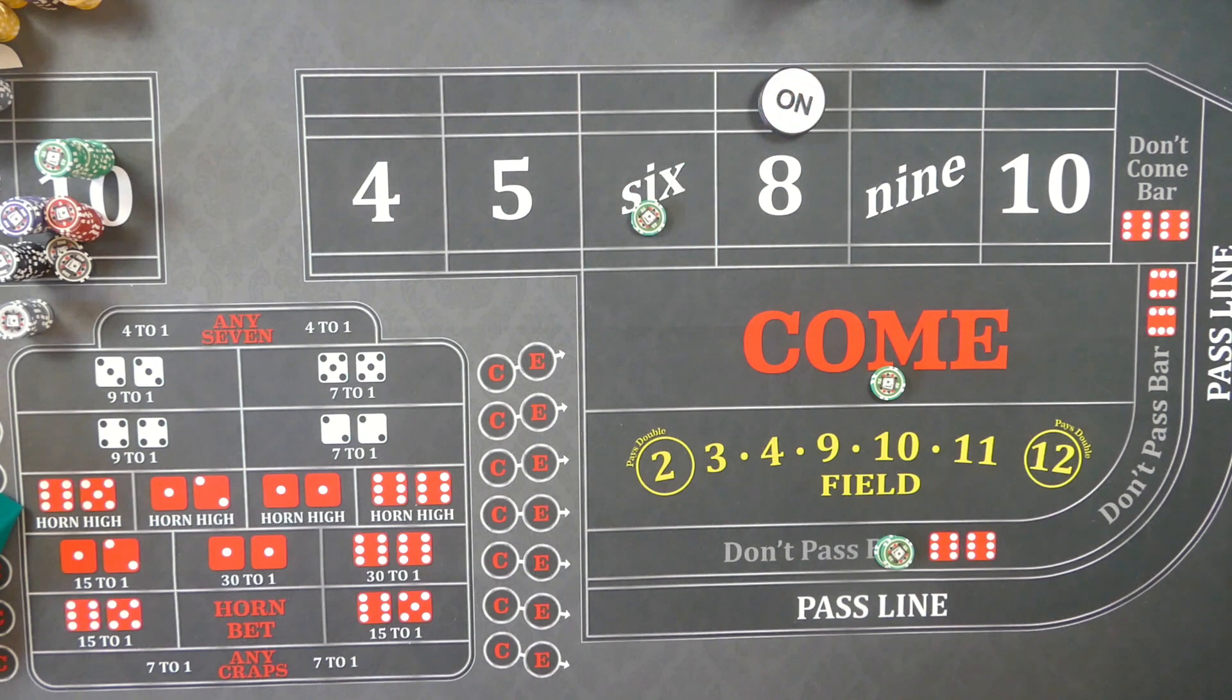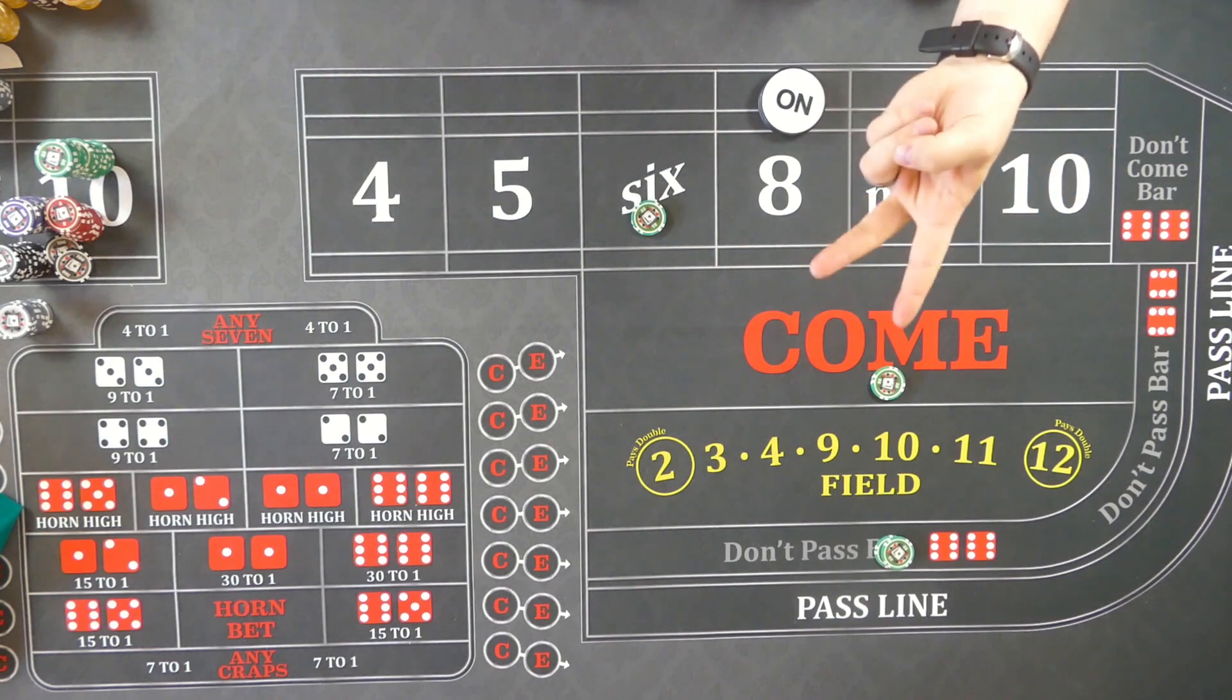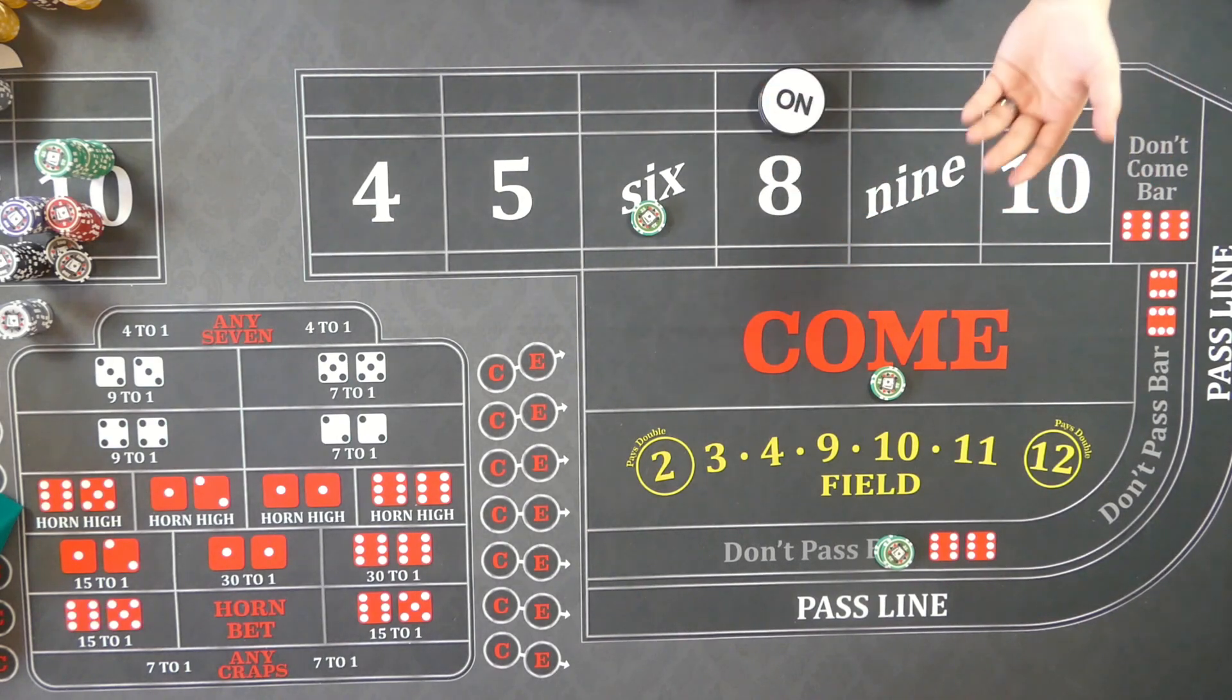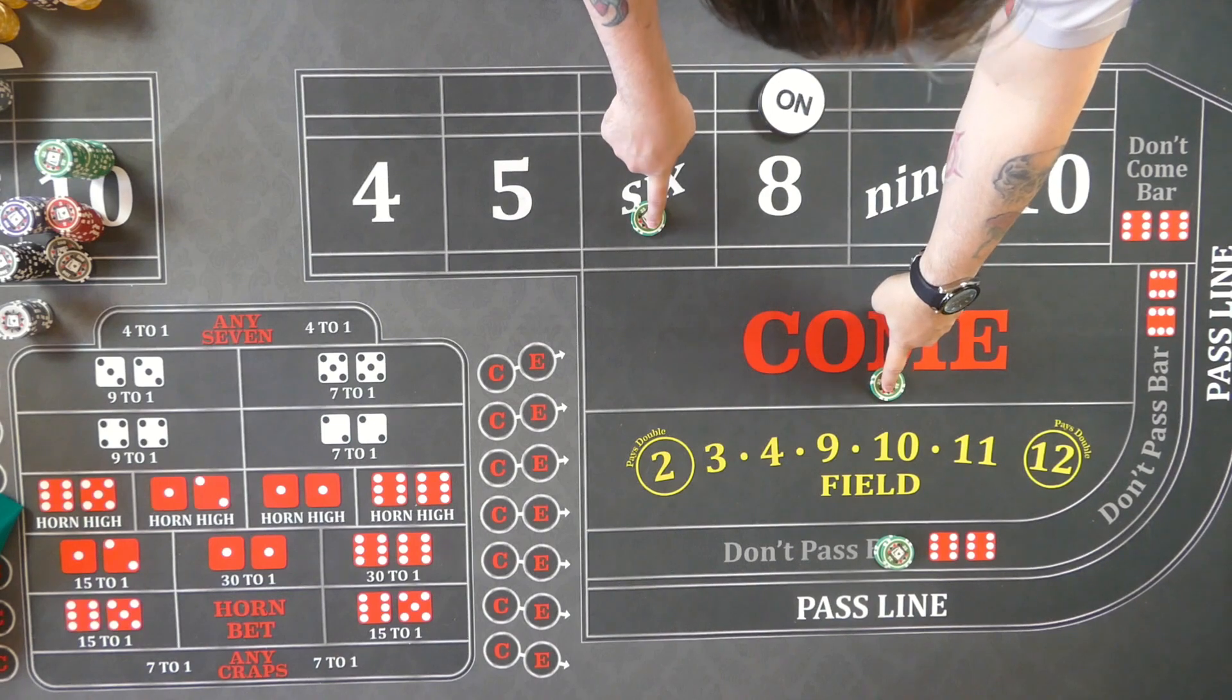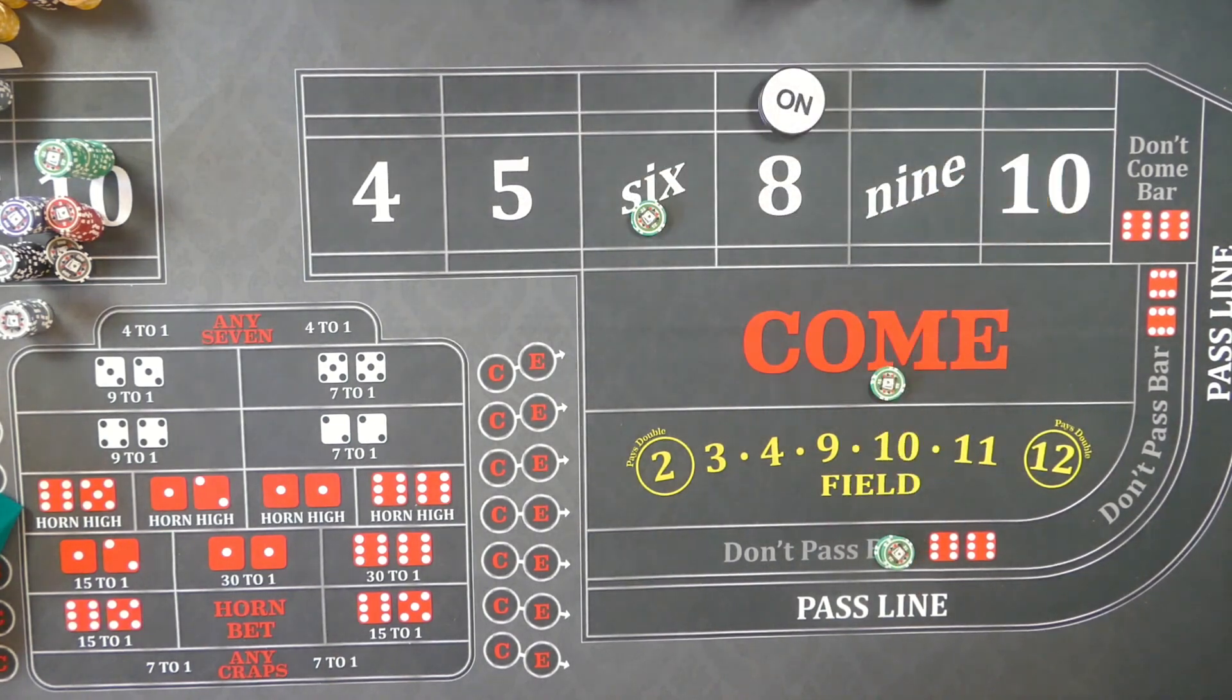On a third roll seven out - because the first roll set the point, second roll was the six, third roll seven out - they're going to get paid here but they lose here. So it's a wash. They're going to make 50 bucks.